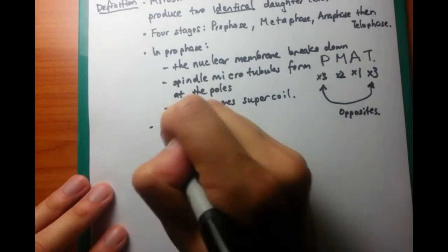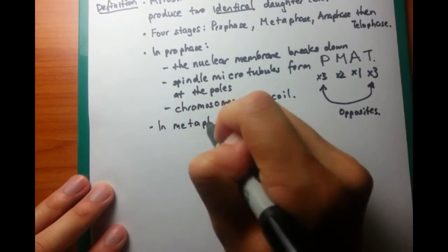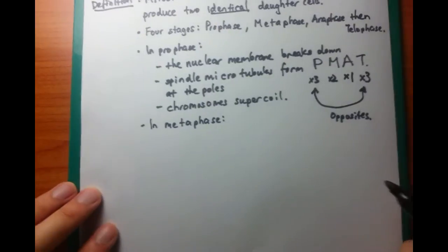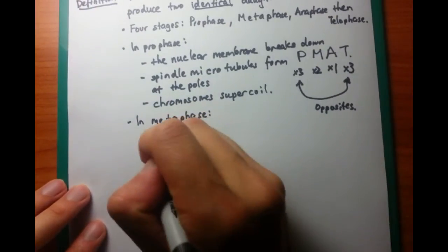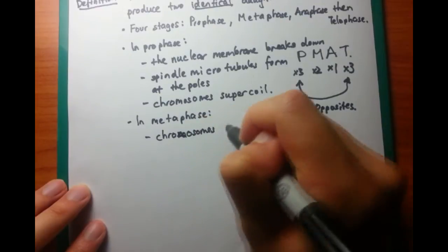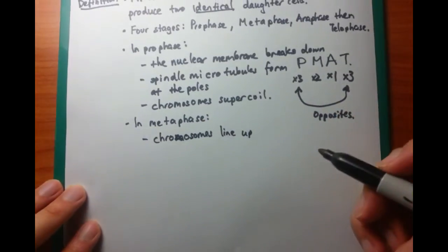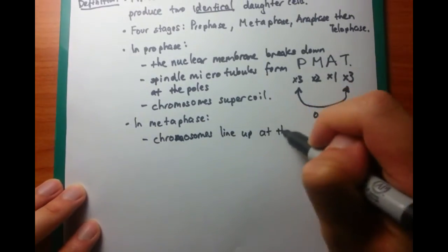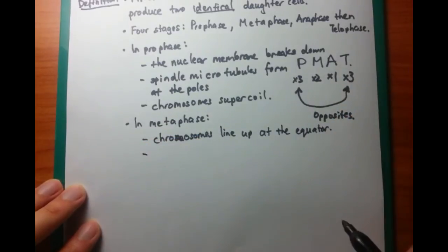Now, before we move on to metaphase, we have to keep in mind that in metaphase, there are two things that occur. And metaphase starts with an M. So think about metaphase as things going in the middle. Chromosomes, they line up at the middle, or the equator of the cell. And spindle microtubules attach to the middle of each chromosome, or the centromere of each chromosome.